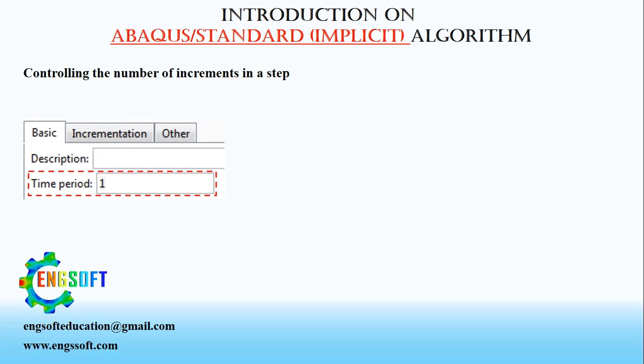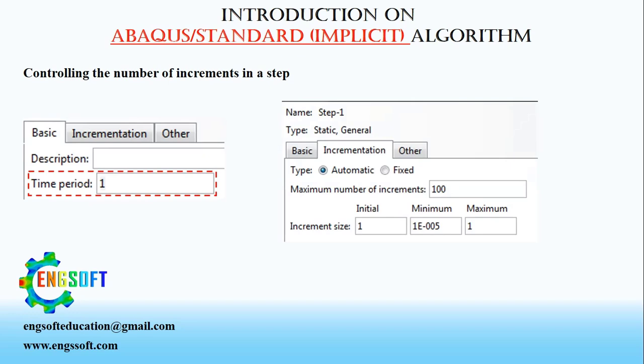In the second tab, called incrementation, there are important settings that must be modified with respect to the problem. Initial increment size, which is one by default. Minimum increment size, which is 0.00005 by default. Maximum increment size, which is one by default. And maximum number of increments, which is 100 by default.